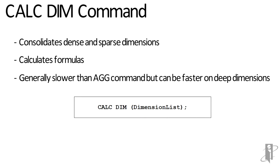You might find a case where calcdim is faster — generally it occurs on dimensions that are at least 6 levels deep. So if you have some of those really deep dimensions, try it with calcdim, try it with ag, see which one benchmarks faster and use that one. The syntax is really simple: it's just calcdim and then either one dimension or multiple dimensions separated by commas.